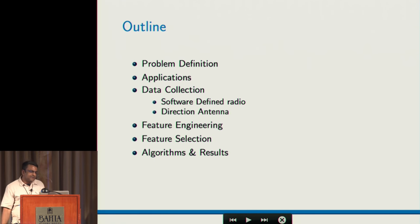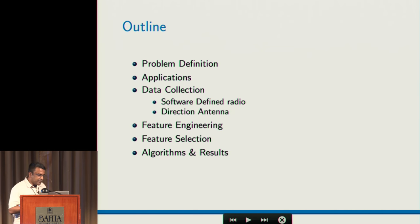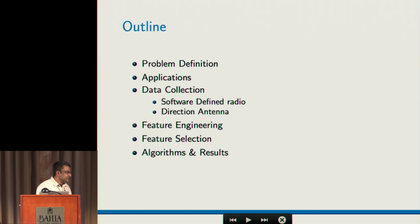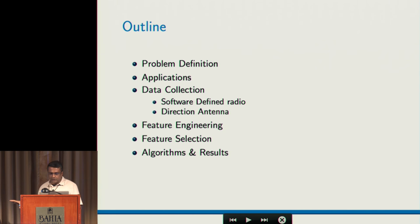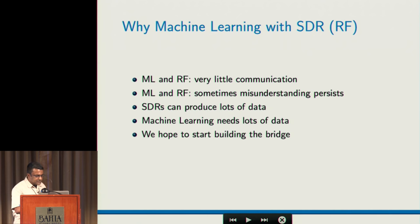This is the basic outline. We'll talk about the problem and some of the applications. We'll talk about how we collected data, we'll talk about feature engineering, which is one of the cornerstones of this work, and feature selection. And finally, we'll talk about the algorithms that we used.